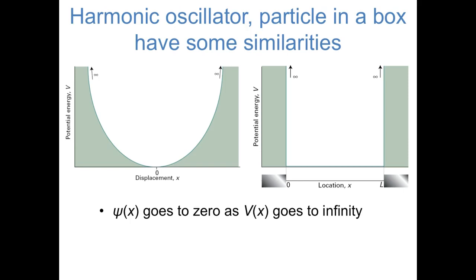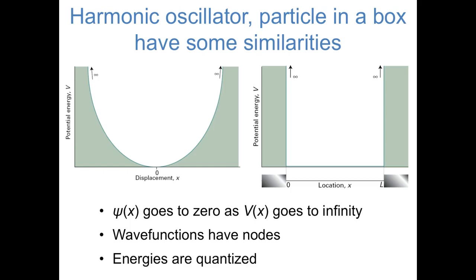For one thing, we know that as you go to the sides, as the potential energy goes to infinity, the wave functions in both systems have to go to zero, or else the energy of the wave function would be infinite. Also, we expect the wave functions near the center to be oscillating and to have nodes. In the same way the particle in a box wave functions each had a different number of nodes and their energies increased with increasing number of nodes, we expect something similar for the harmonic oscillator. Also, the fact that the potential energy goes to infinity on both sides provides boundary conditions that cause the energies of the wave functions to be quantized for both of these systems.